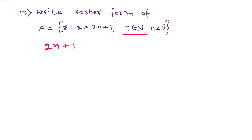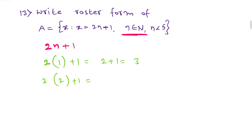He clearly mentioned that n belongs to natural numbers, so natural numbers start from 1 onwards. In the place of n, let us substitute natural numbers starting from 1. 2 times 1 plus 1 = 2 plus 1 = 3. Then 2 times 2 plus 1 = 4 plus 1 = 5.